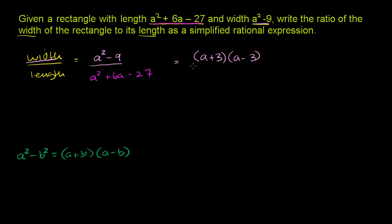For the denominator, we have to think of two numbers that when we add them, we get positive 6, and when we take their product, we get negative 27. If I have positive 9 and negative 3, that would work. So this can be factored as (a + 9)(a - 3). 9 times a is 9a, a times negative 3 is negative 3a. When you add those two middle terms together, you get 6a. And 9 times negative 3 is negative 27.